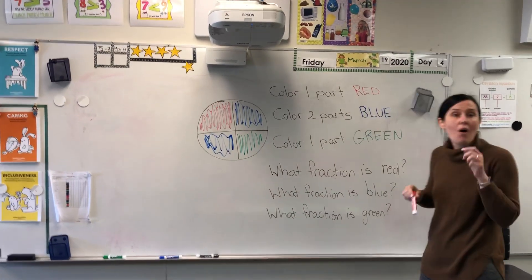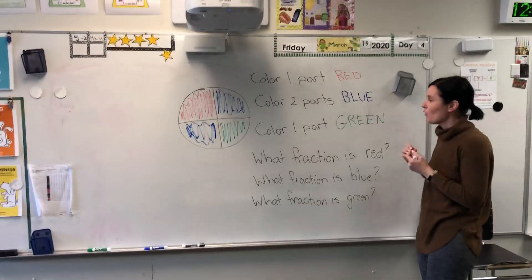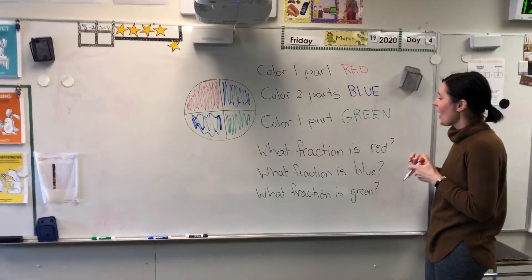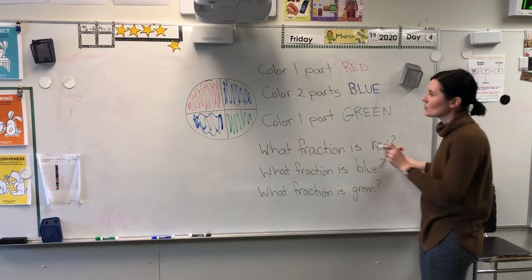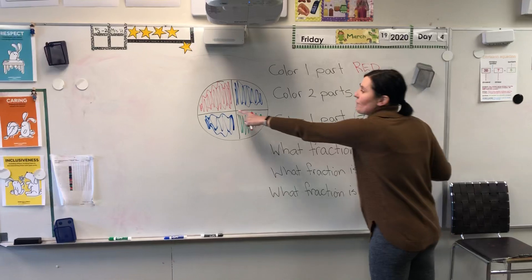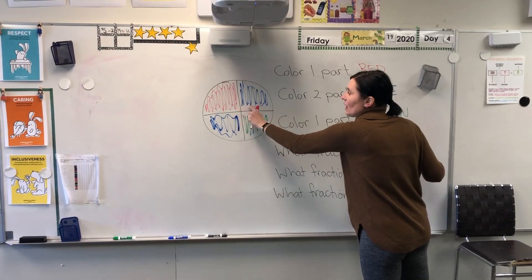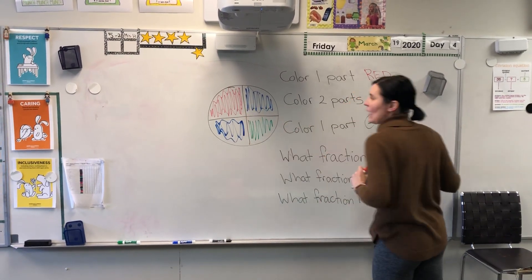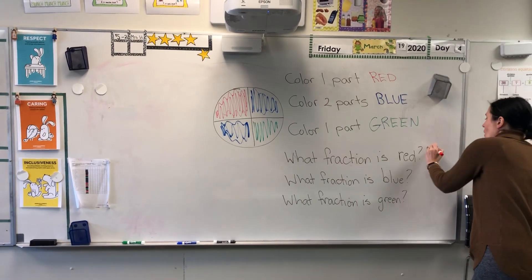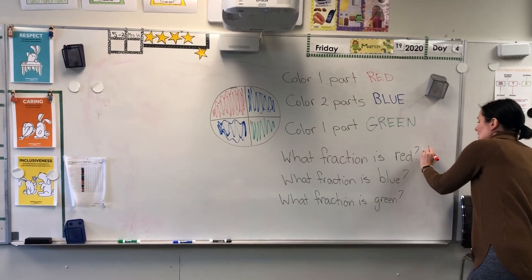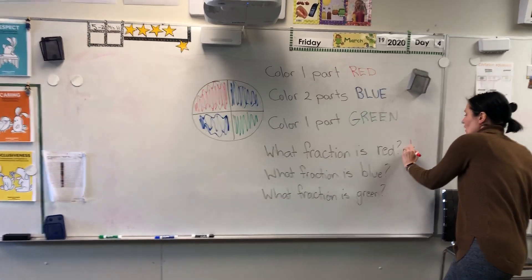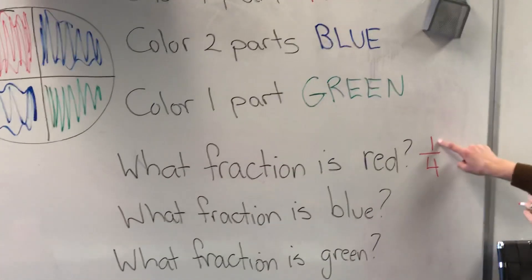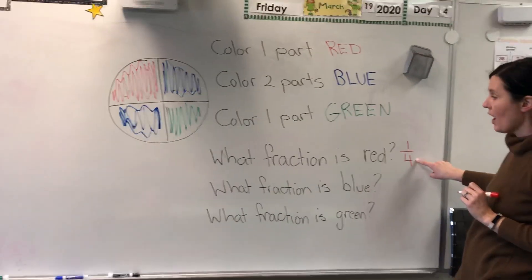One over four. So what fraction is red? We have one part of the four parts is red. So we're going to write one over four, because one part is red out of four parts.